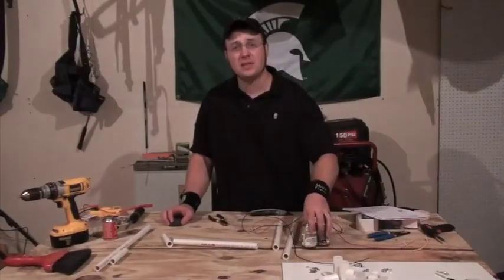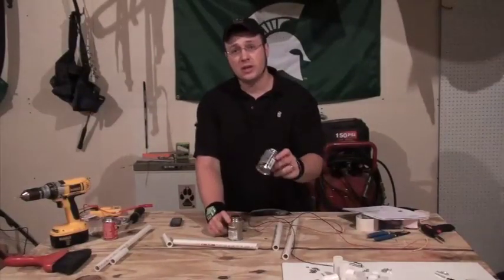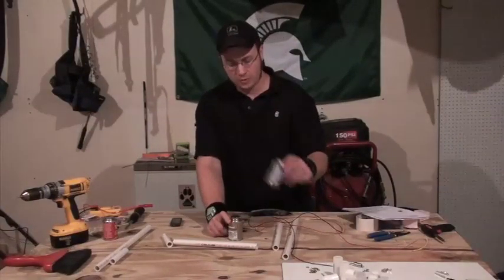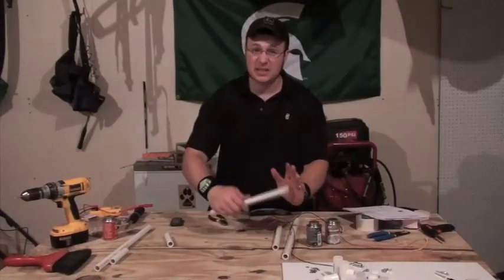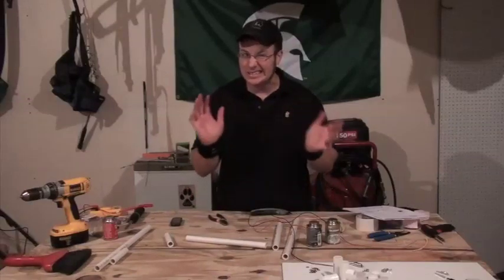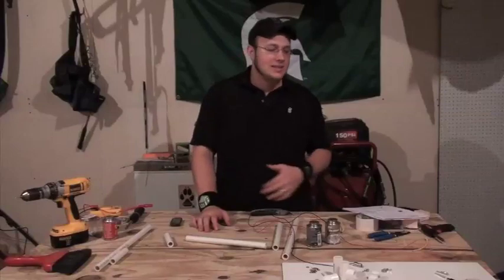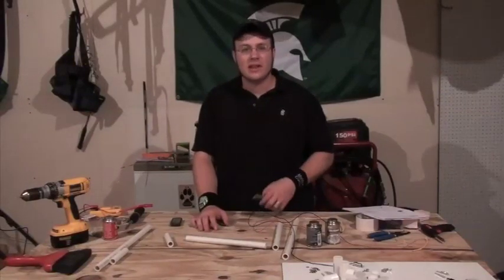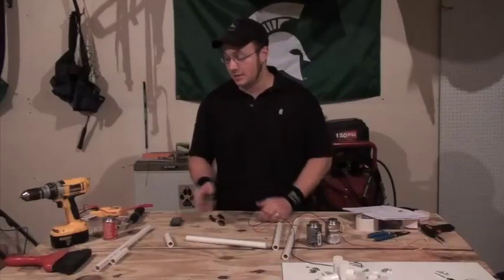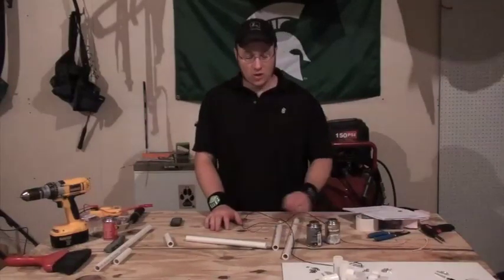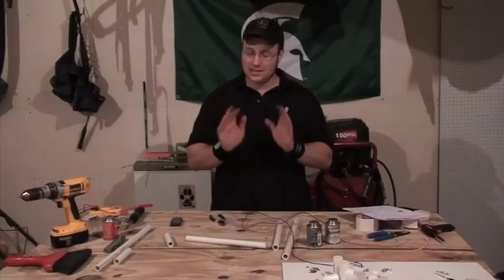When using PVC adhesive and glue, just know that you prime first with the purple and then you follow that up with the actual cement itself. Once you get these pieces kind of together, you kind of got maybe 20 seconds, maybe 30 seconds. They say it's not a strong bond until after, I don't know, five minutes or something like that, but I've never been able to get it apart after 30 seconds. So just know that you've got to measure twice, cut once, and once it's set, it's set, so you're kind of screwed once you get it in there.